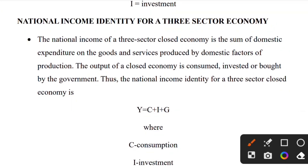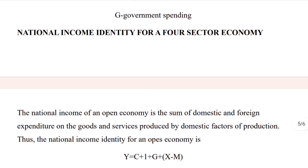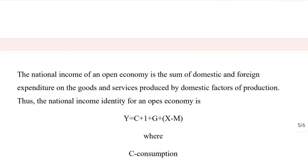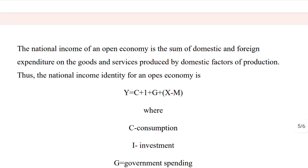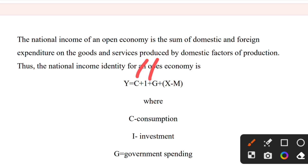The national income identity for a three-sector closed economy: the national income is the sum of domestic expenditure on goods and services produced by domestic factors of production. The output is consumed, invested, and bought by the government. Thus, Y = C + I + G. For a four-sector open economy, national income is the sum of domestic and foreign expenditure: Y = C + I + G + (X - M), where X is exports and M is imports.